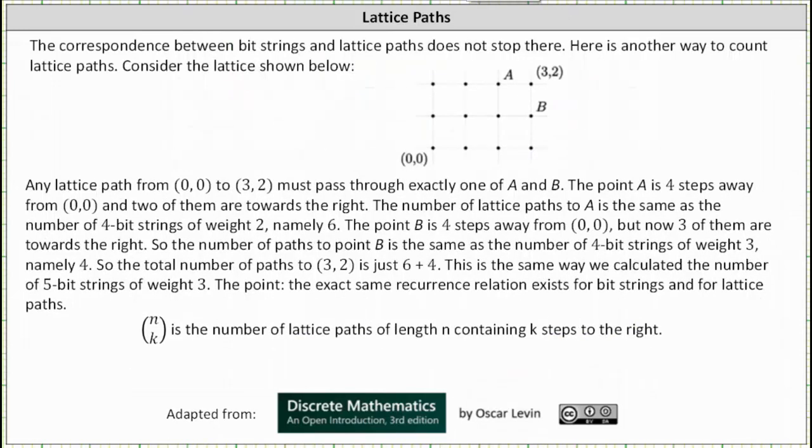The correspondence between bit strings and lattice paths does not stop there. Here's another way to count lattice paths. Consider the lattice shown below where we have the points (0,0), (3,2), as well as point A and point B.